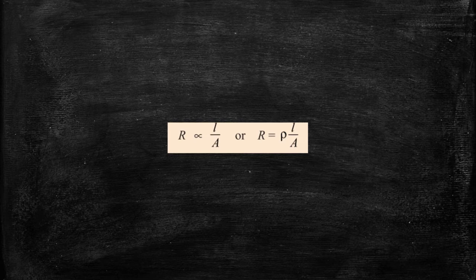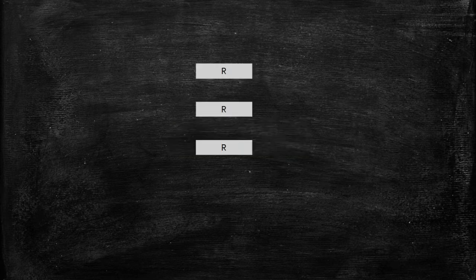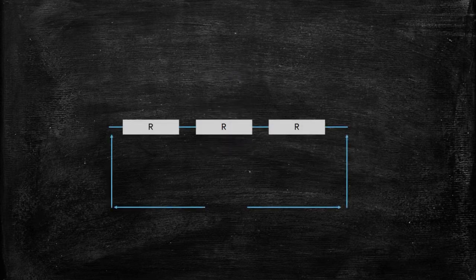Now let's say you have some resistances but they are not sufficient and you want to increase your total resistance. Simply what you will do is connect the resistances in series, and what you will get is R plus R plus R — your total resistance will increase.